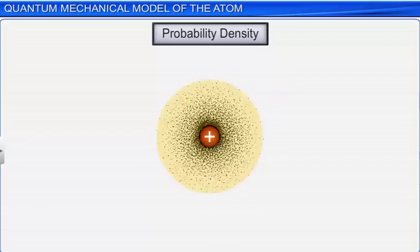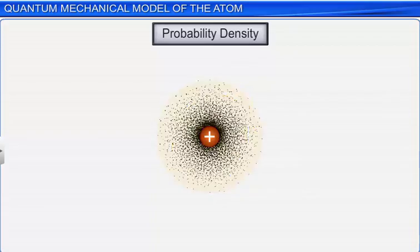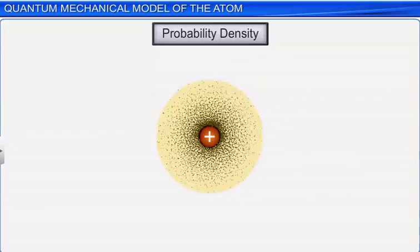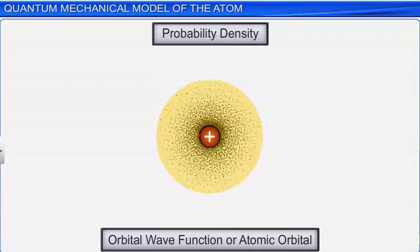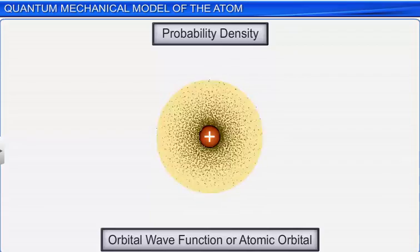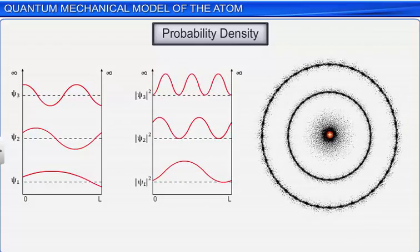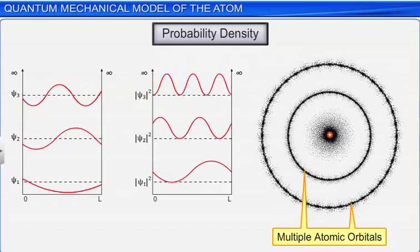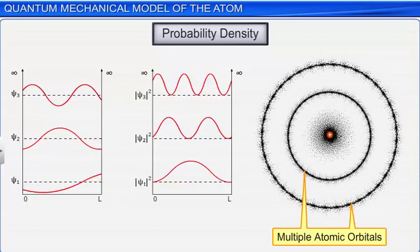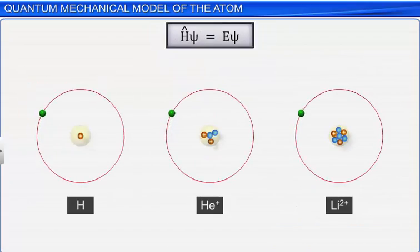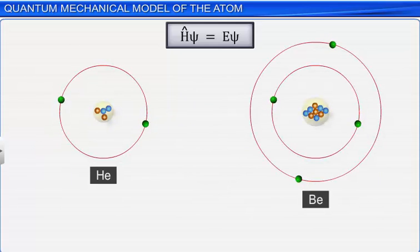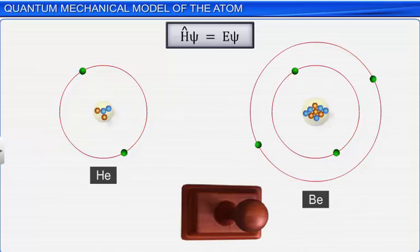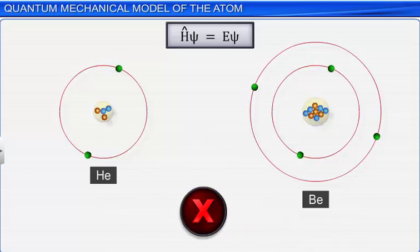This three-dimensional space around the nucleus where the probability of finding the electron is maximum is called an orbital. This is why the wave function for an electron in an atom is also called orbital wave function, or atomic orbital. An electron can have multiple wave functions and therefore multiple atomic orbitals. Schrödinger wave equation can successfully explain all aspects of hydrogen and hydrogen-like species. However, it cannot be completely solved for multi-electron atoms.